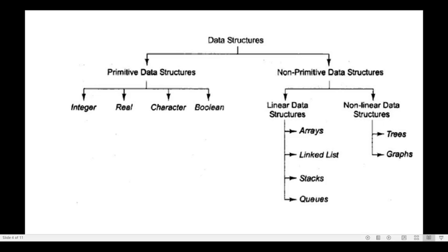Here we can see the classifications of data structure. One is primitive data structure and another is non-primitive data structure. Primitive data structures store data in basic data types like integer, real or float, character, and boolean. Non-primitive data structure is divided into two parts: linear data structure and non-linear data structure. Linear data structure stores data linearly — arrays, linked lists, stacks, and queues. Non-linear data structure includes trees and graphs.